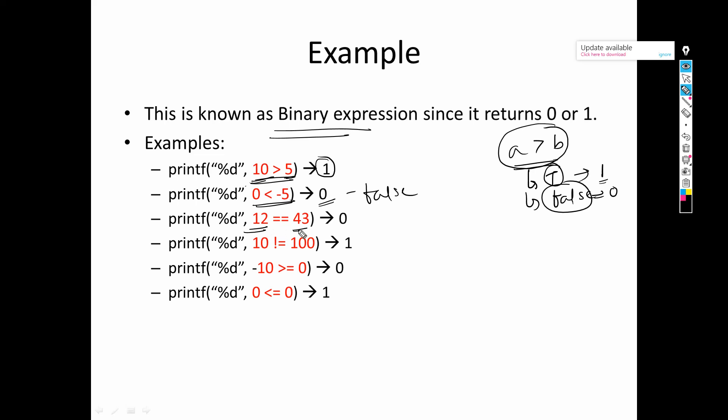Then is 12 and 43 the same? So what will we say? We will say no, so that's why it returns 0. Is 10 not equals to 100? So correct, 10 is not equals to 100, so that's why it returns true means 1.